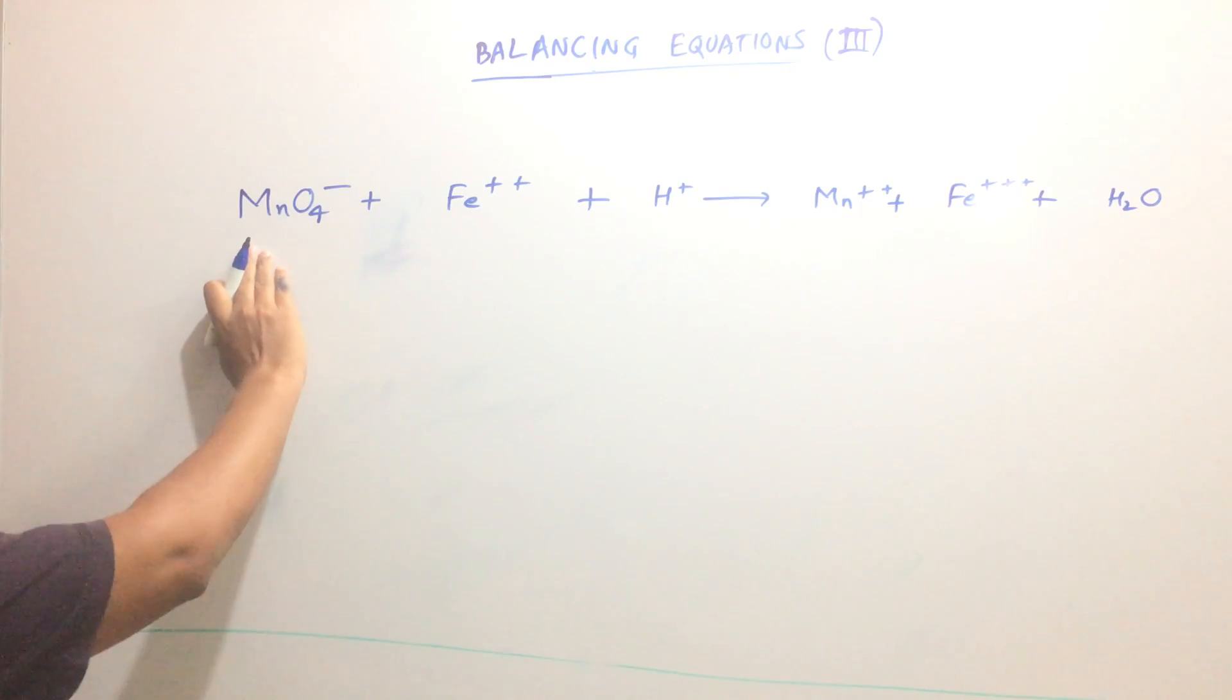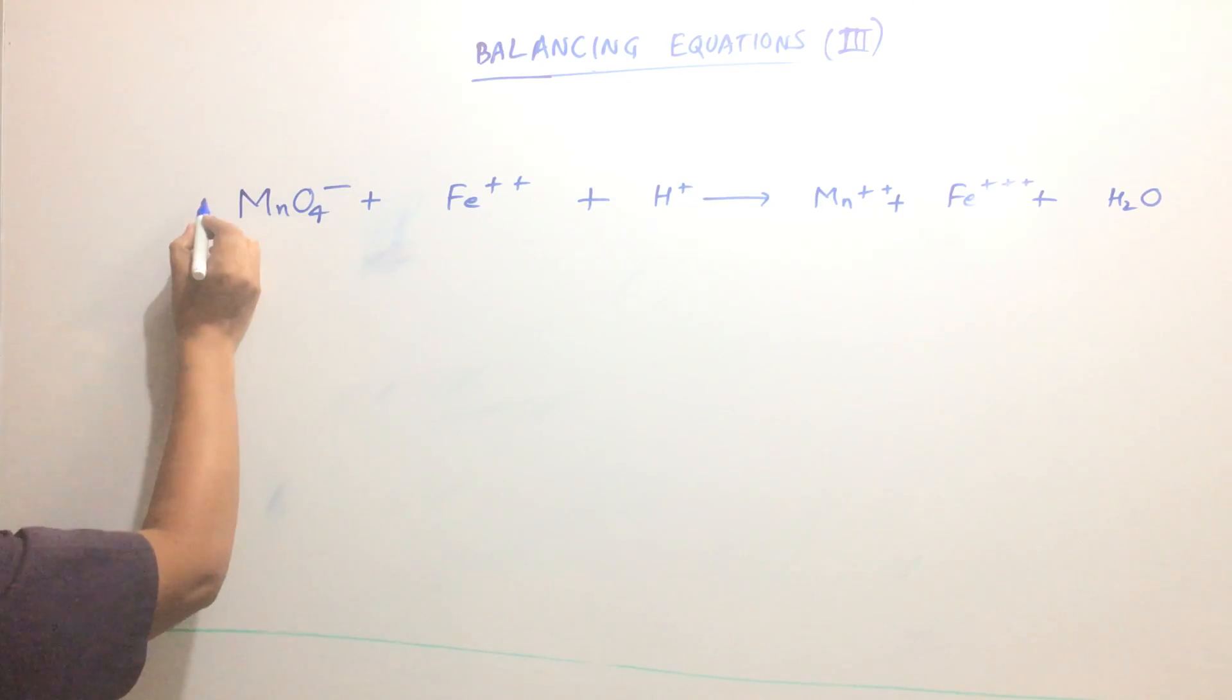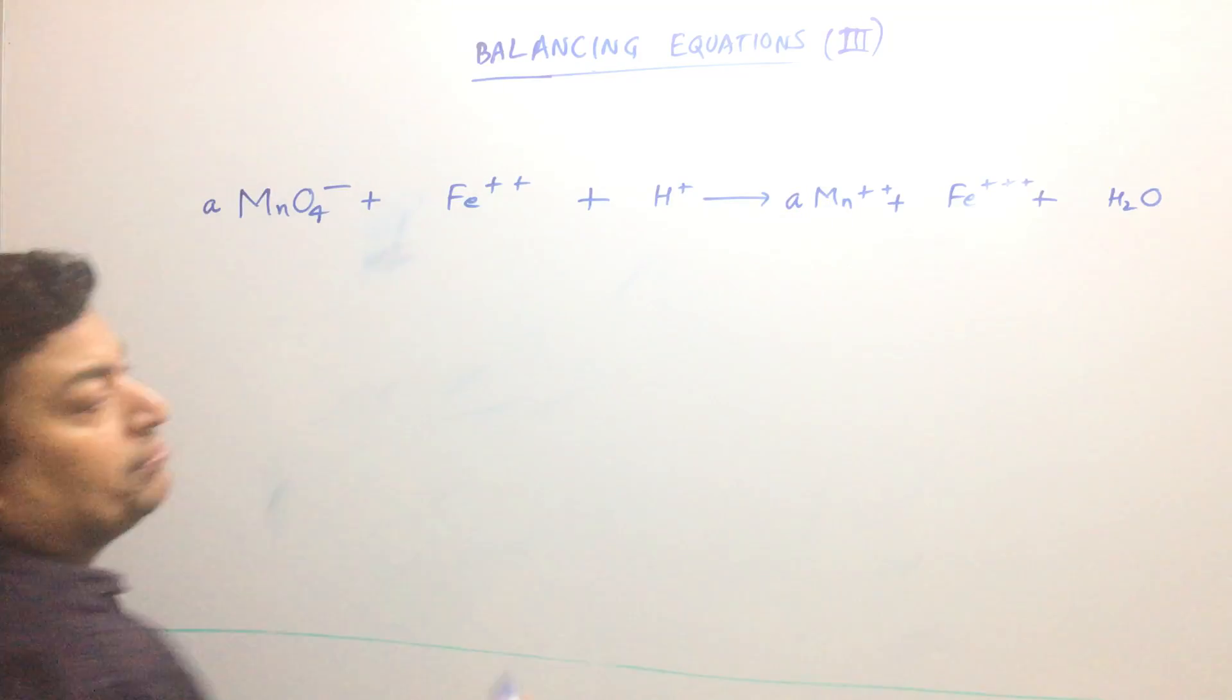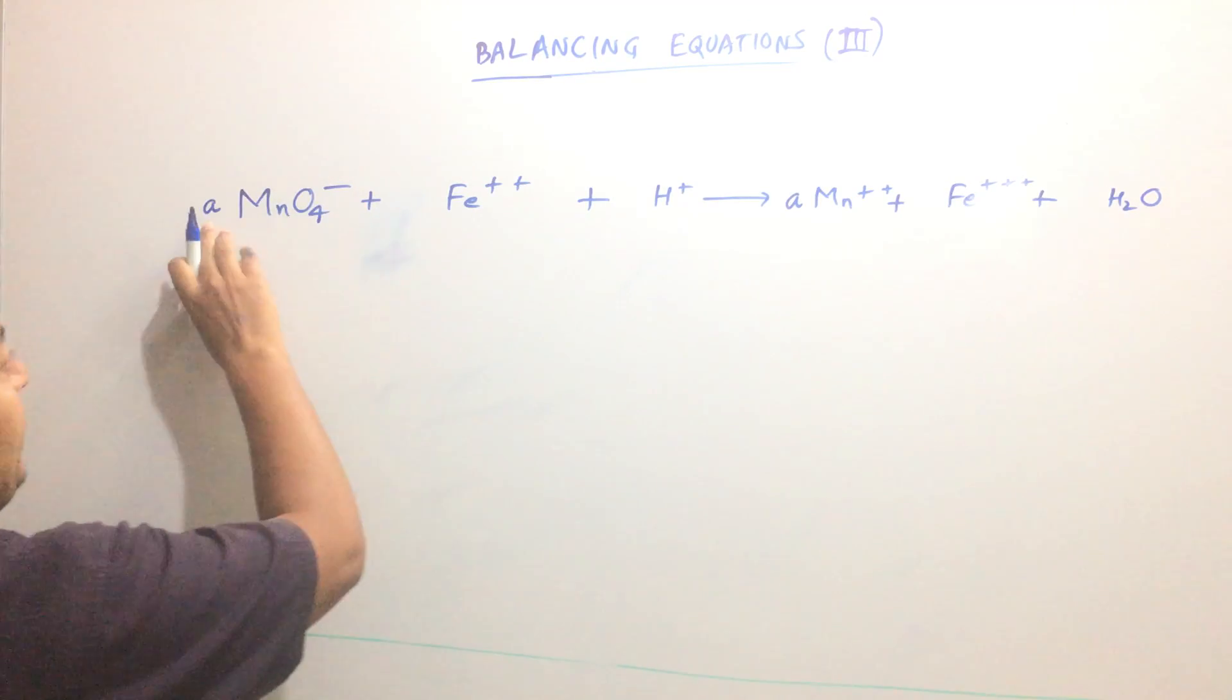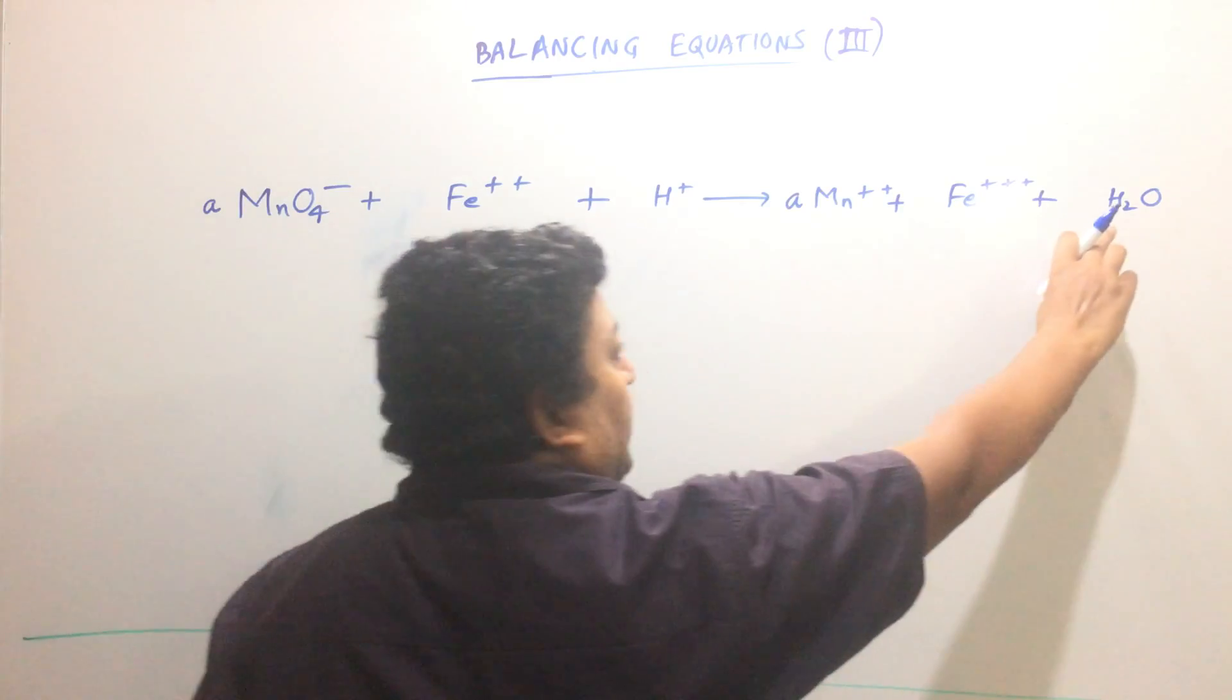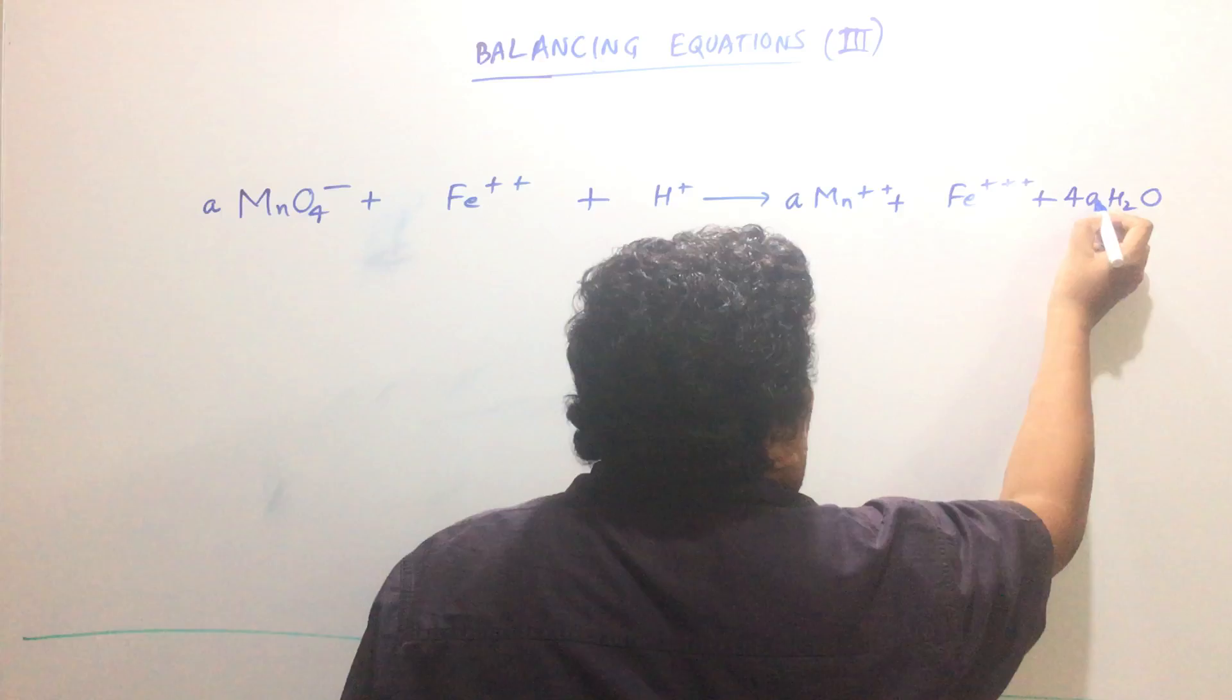Here you see both sides: Mn is appearing only here and here. So suppose I write A here, I must write A here because Mn atoms have to be balanced. Now if I write A here, then oxygen atoms will be 4A. And oxygen appears here, that means I have to write 4A here.